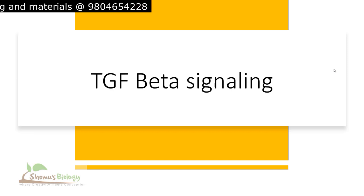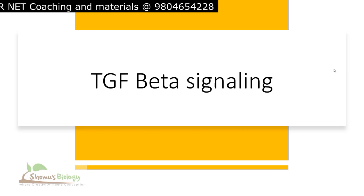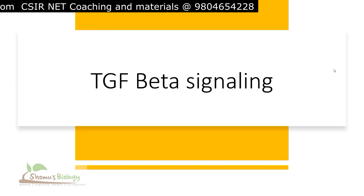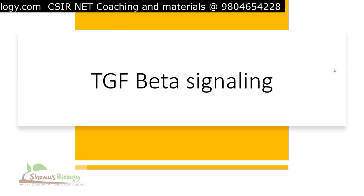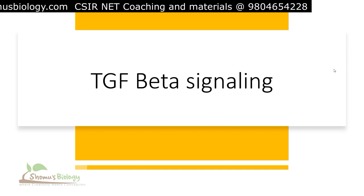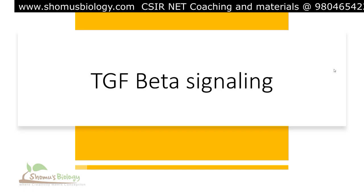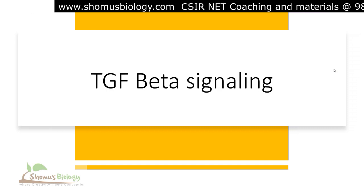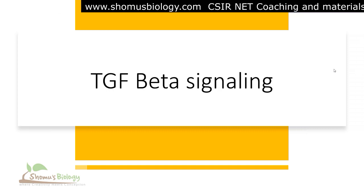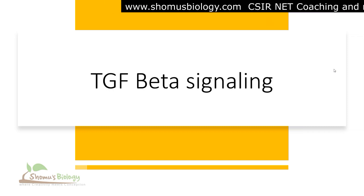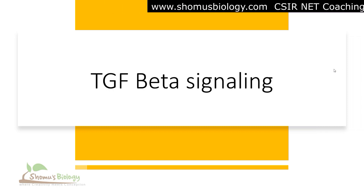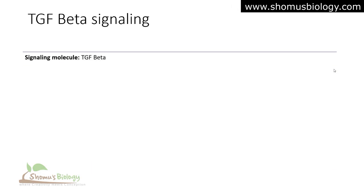TGF-beta stands for transforming growth factor beta. It is one of the most potent endogenous negative regulators of hematopoiesis in our body, and it helps in proliferation, differentiation, and function of many types of lymphocytes, macrophages, and dendritic cells. TGF-beta signaling is well related and regulated to our immune system.